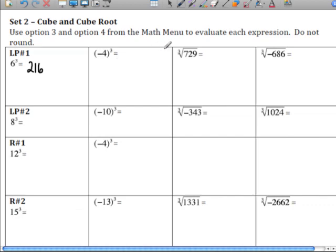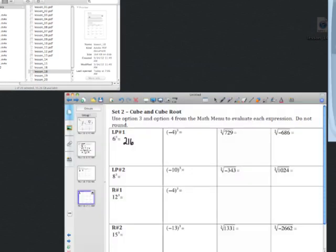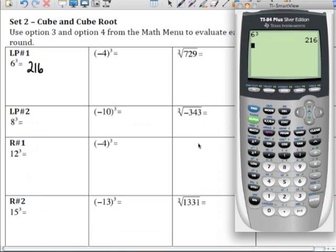And then I'm going to skip over to this one right here, and show you the cube root of 729. Now, with this one, I need to go to the math menu first, choose the cube root function right here, choice 4.